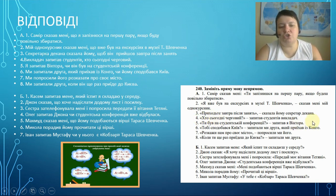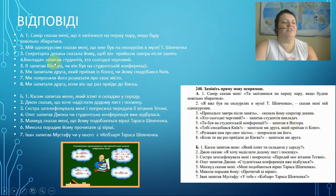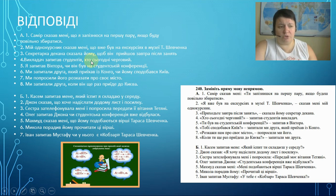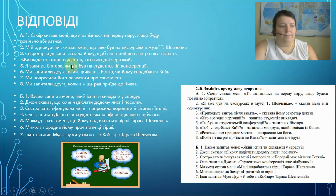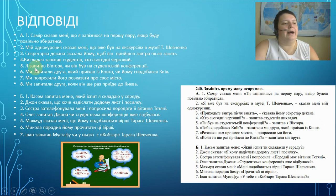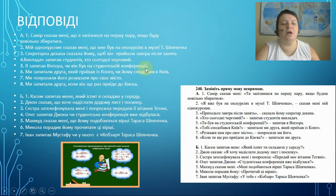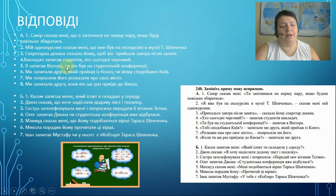Example four — direct speech: 'Хто сьогодні черговий?' — запитав студентів викладач. 'Who is on duty today?' the teacher asked the students. Indirect: the teacher asked the students who was on duty today. We don't change anything at all because we have a question word here. Example five — direct speech: 'Ти був на студентській конференції?' — запитав я Віктора. Indirect: Я запитав Віктора, чи він був на студентській конференції. We don't change tenses in Ukrainian — only put ЧИ, like 'if' in English.